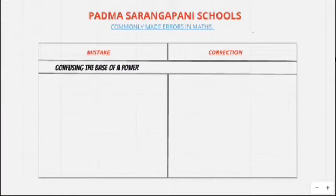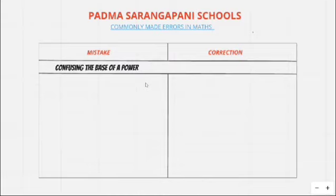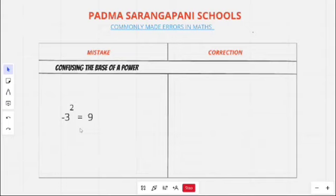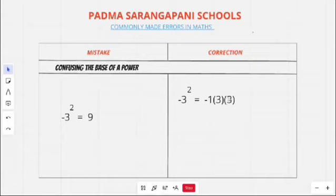The first commonly done mistake is confusing the base of a power. Consider the number minus 3 to the power 2. If a negative number has an even exponent, you will think the answer will be positive — but that is wrong. Minus 3 to the power 2 is considered as negative 1 into 3 into 3, which is equal to negative 9.